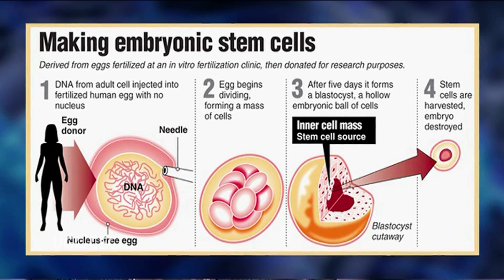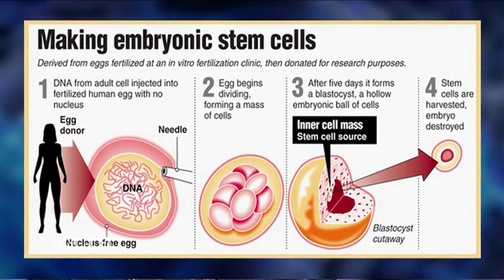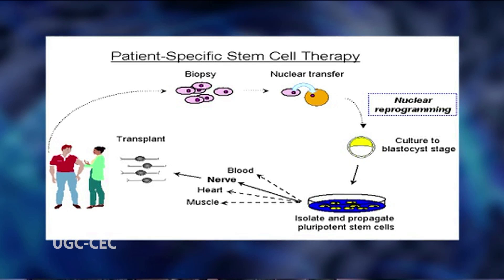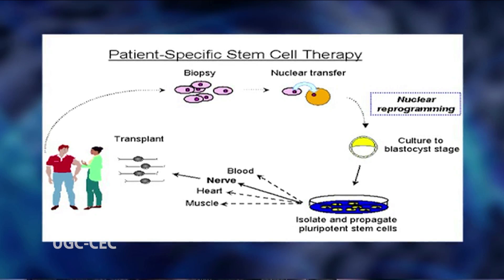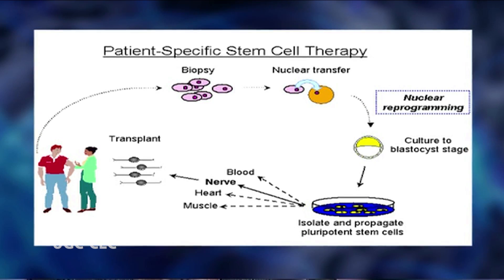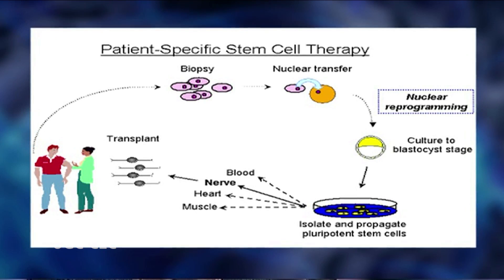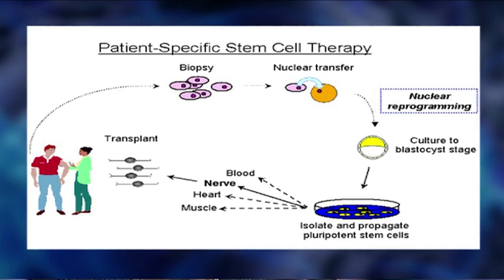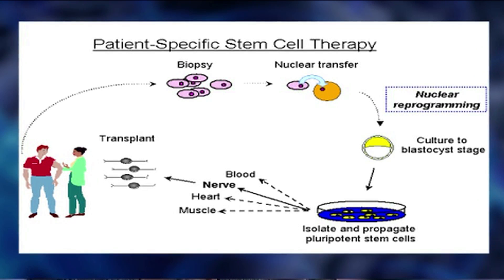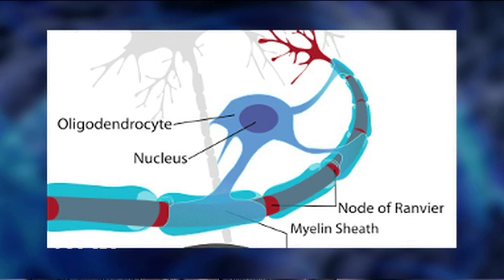Worldwide, dozens of genetically distinct human embryonic stem cell lines, each derived from a single embryo, are available for experimental investigation. The long-range goal of clinical researchers is to learn how to coax embryonic stem cells to differentiate in culture into each of the many cell types that might be used for cell replacement therapy. Numerous studies have shown that transplants of differentiated embryonic stem cell-derived cells can improve the conditions of animals with diseased or damaged organs.